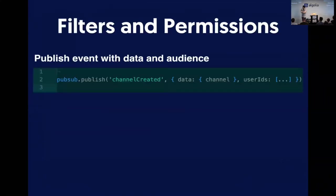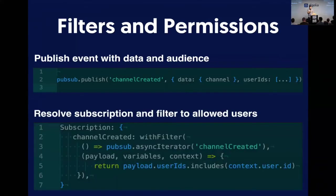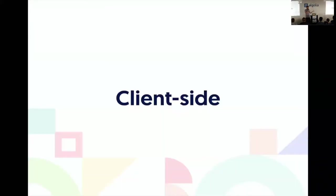How do you do that? When you're using the pub/sub, you basically just publish the event, and then add your data and your scope. For me, it's like an array of user IDs, and then I will be able to filter before sending the event. That's it for the server part.